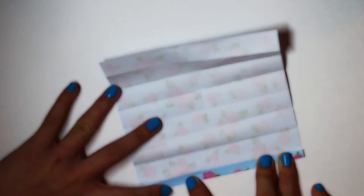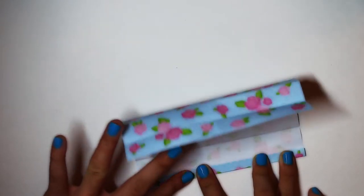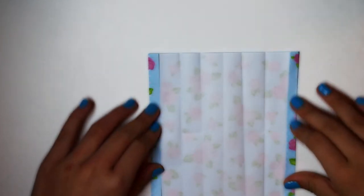Now, take the outer edge and fold it to the nearest line. And do the same thing on the other side so it's symmetrical.